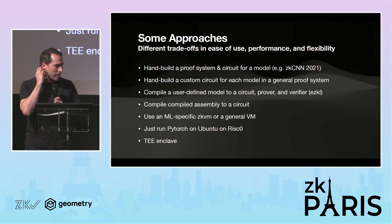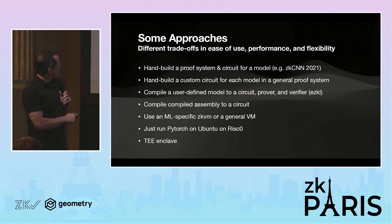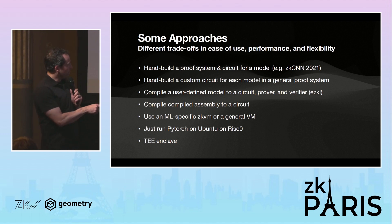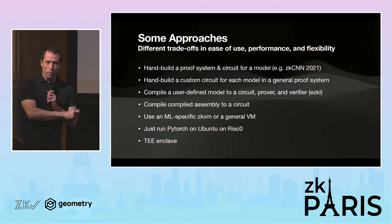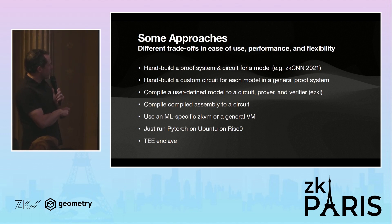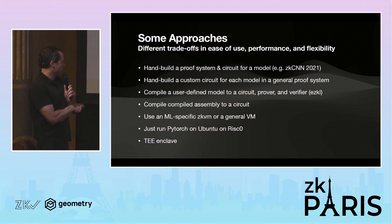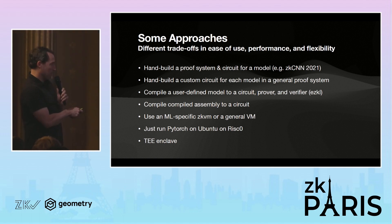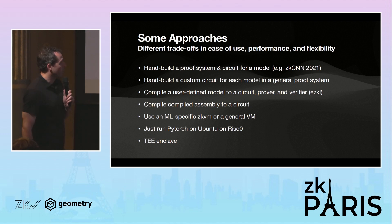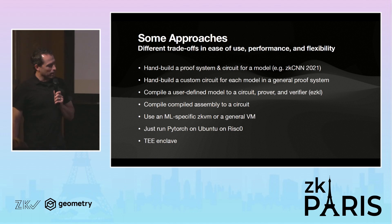There are many different approaches to ZKML. You could hand-build a proof system and circuit for a model. You can build a custom circuit for each model in a general proof system, which is how we started. Then you can bake that intelligence into a compiler — this is what we believe is the sweet spot. You can compile the compiled assembly into a circuit, like what Nil Foundation does. You can use an ML-specific or general VM. In theory you could just run Python, PyTorch on Ubuntu on RISC Zero — it'll just be a little slow for now. And you can change trust assumptions with something like trusted execution. All have different trade-offs and will be applicable in different situations.